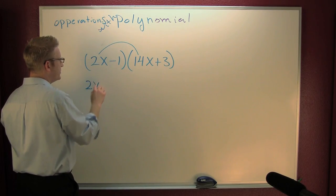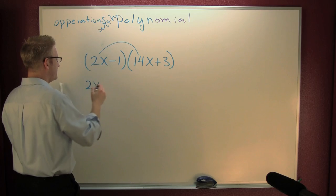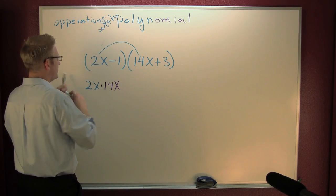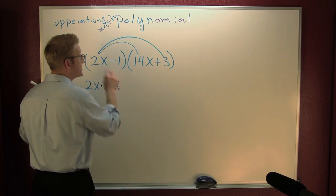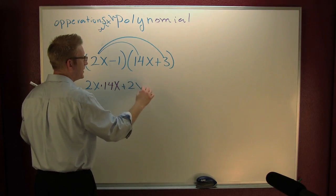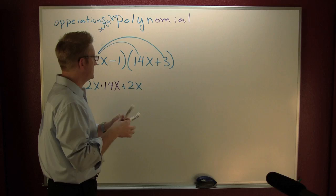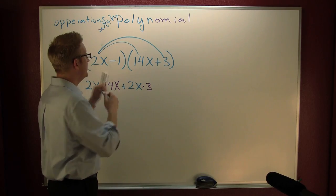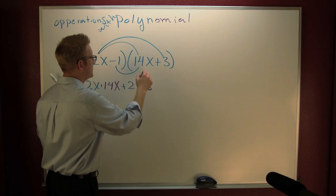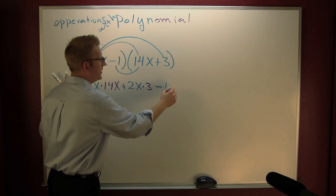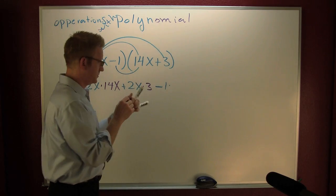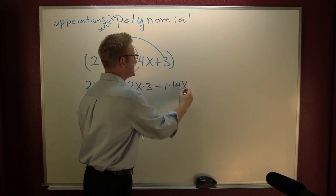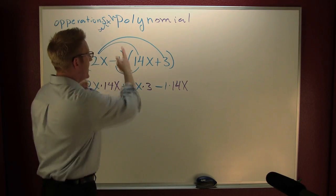It's your 2x times 14x. The outers - that's a plus 2x times 3. The inners - this is a minus 1 times 14x. And then I got...